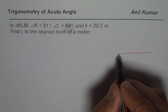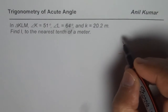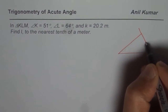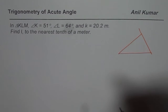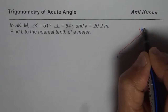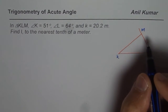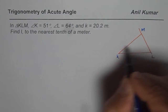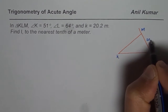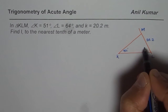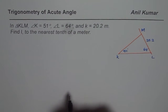Let's say that's the triangle. We have vertices K, L, and M. At K we have an angle of 51 degrees, and at L we have an angle of 64 degrees. We are given K as 20.2, so side K is the side opposite to vertex K, which is 20.2. You need to find side L, which is the side opposite to vertex L.